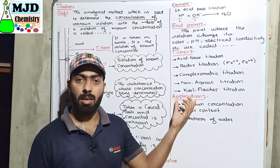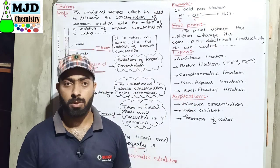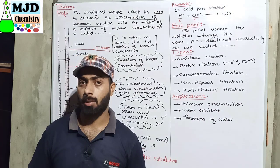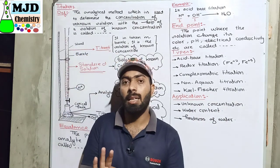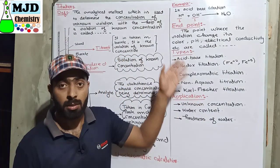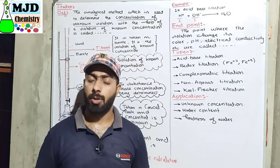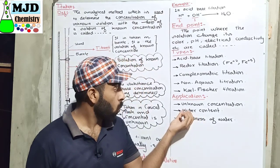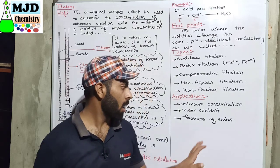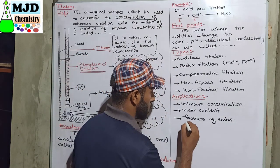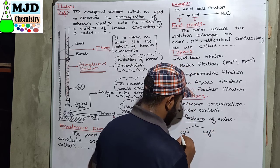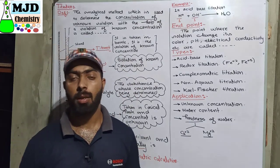Finally, what are the applications of titration? First, we can calculate the unknown concentration of any substance — for example, calcium, sodium, acids, or bases. Second, we can determine water content in substances such as the atmosphere using titration. Third, we can determine the hardness of water. The hardness of water is due to calcium ions and magnesium ions, and if we want to determine the concentration of these two ions, we use titration.